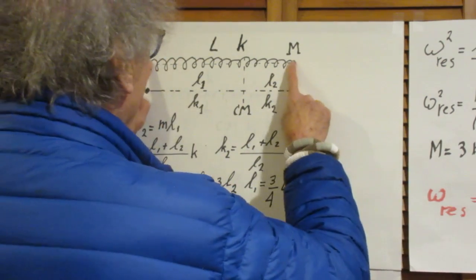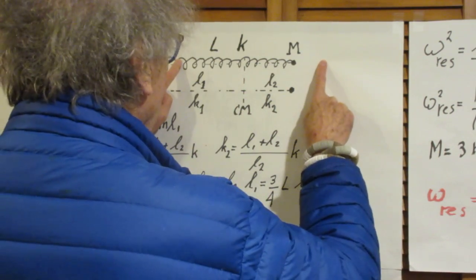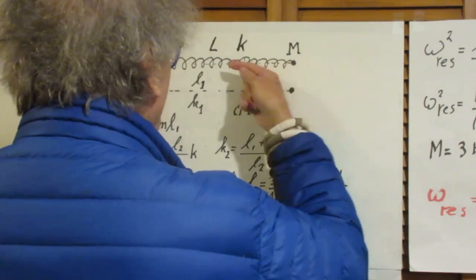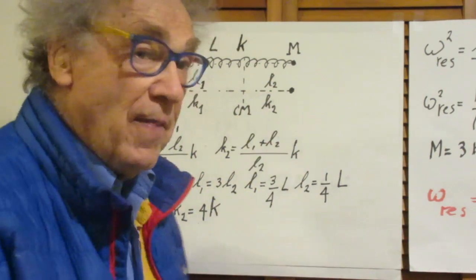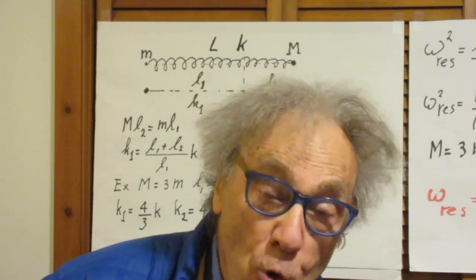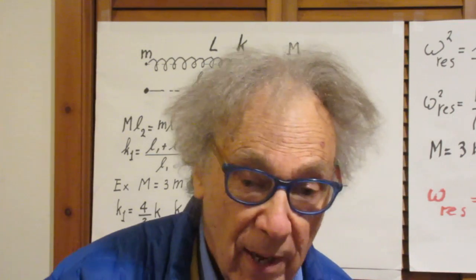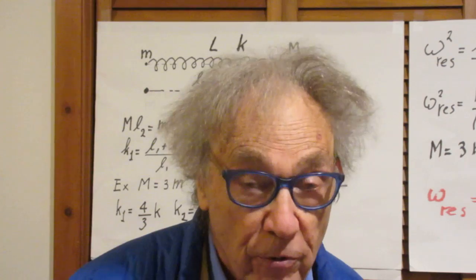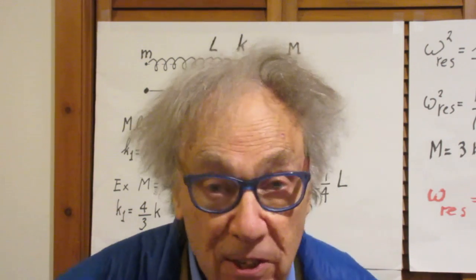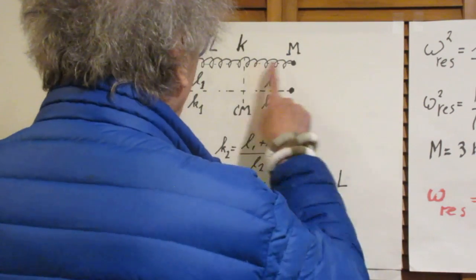The center of mass would now experience an acceleration also in this direction. And that is not possible because the center of mass can only be accelerated if there is an external force. And there is no external force. The table is frictionless. So this motion cannot happen.